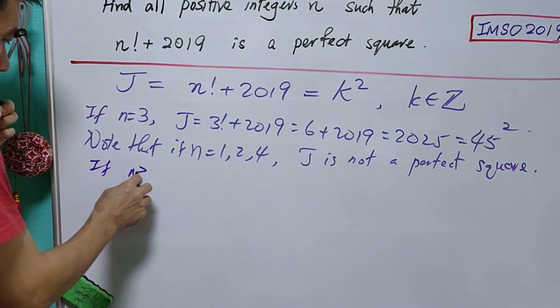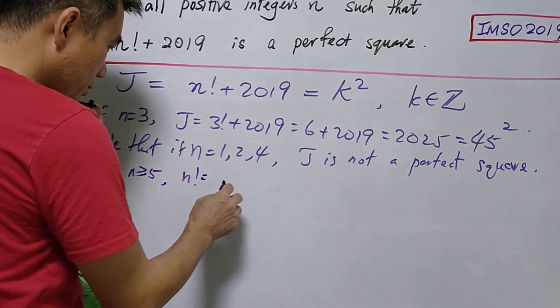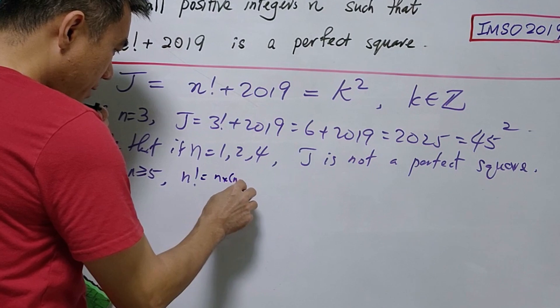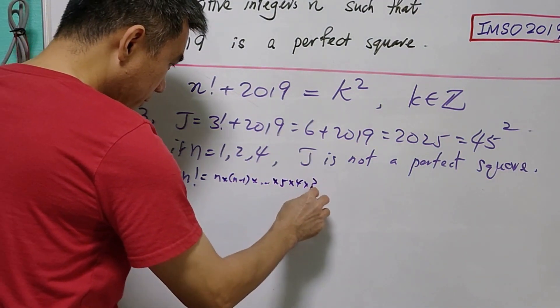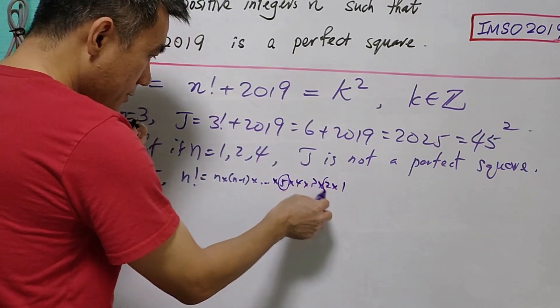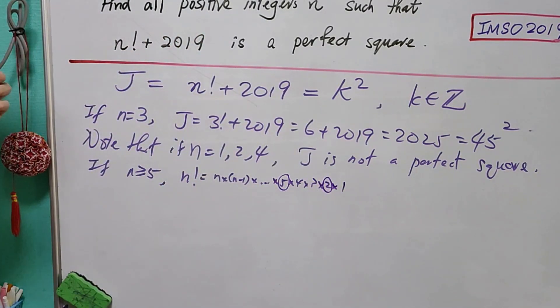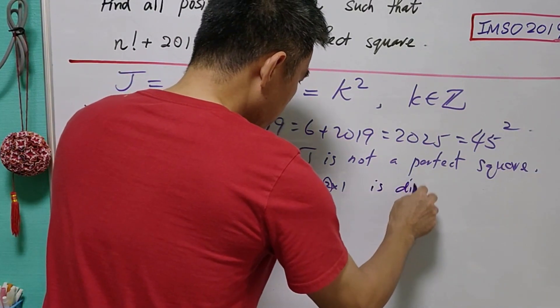Now, if n ≥ 5, then n! = n(n-1)...5·4·3·2·1, and you can see that it has a factor of 2 and 5, so it is divisible by 10.